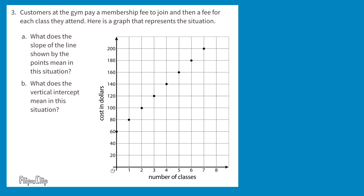Problem 3: Customers at a gym pay a membership fee to join and then a fee for each class they attend. Here is a graph that represents the situation.